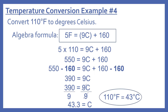Now the same example with the algebra formula: convert 110 degrees Fahrenheit to degrees Celsius. The formula is 5F equals 9C plus 160. We plug in our Fahrenheit and solve for C: 5 times 110 equals 9C plus 160. 5 times 110 is 550, leaving us with 550 equals 9C plus 160.